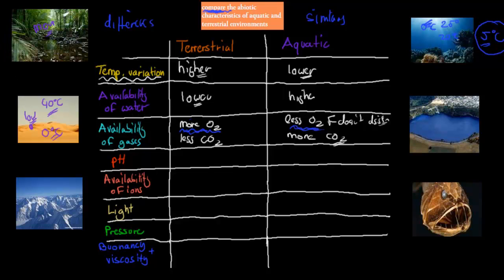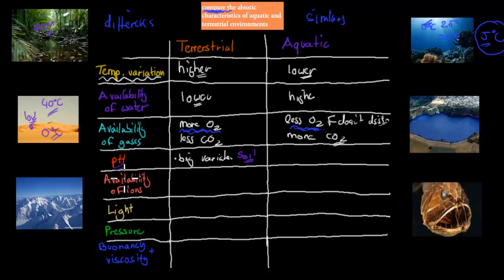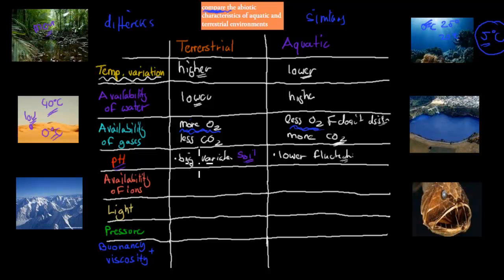When it comes to pH, there are big variations, and most of that has to do with soil. Plants and trees grow in soil, and some plants are best adapted to a pH of 5 or 6, while others prefer a pH of 7 to 8. So soil pH determines what kind of vegetation grows there. Whereas for aquatic environments there are lower fluctuations overall — though carbon dioxide dissolved in water does lower pH slightly — ocean and fresh water pH is generally more stable compared to land soils which can have very different pH levels.